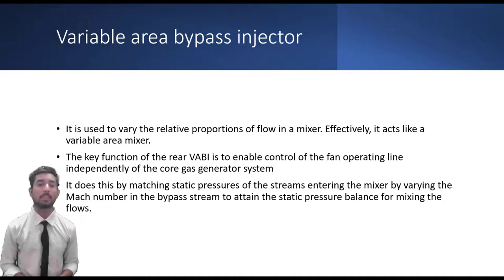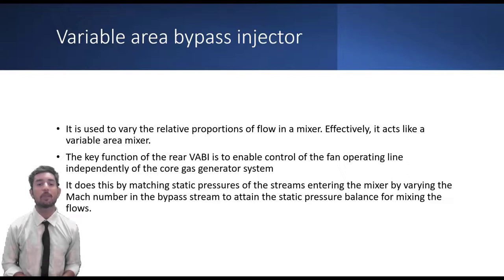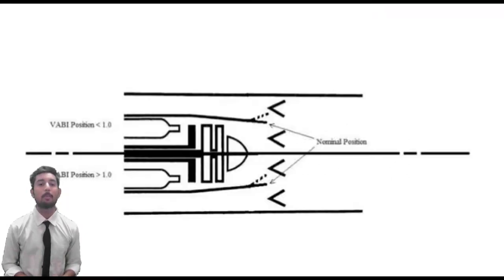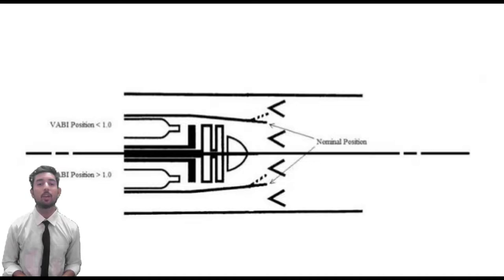The Variable Area Bypass Injector (VABI) is one of the key components which contributes to modulating the cycle parameters of the variable cycle engine under various operating conditions. The key function of the VABI is to enable control of the fan operating line independently of the core gas generator system.